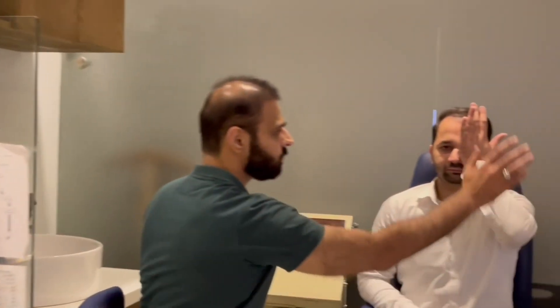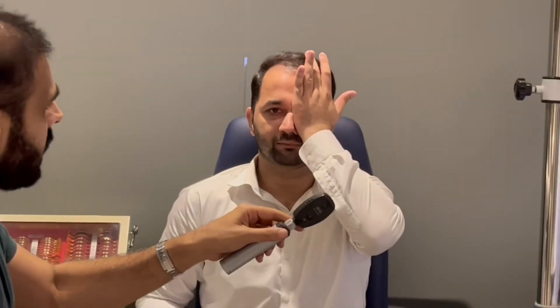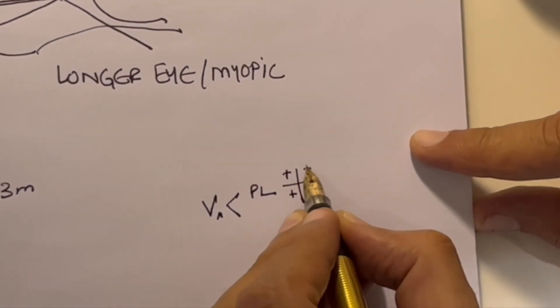If the patient cannot see hand movement either, I take an ophthalmoscope or any other light and shine it in the eye, asking whether they can see the light. If they can, there is a perception of light. I also want to check whether perception of light is present in all four quadrants, so after shining the light centrally, I ask the patient where they see the light from each direction.